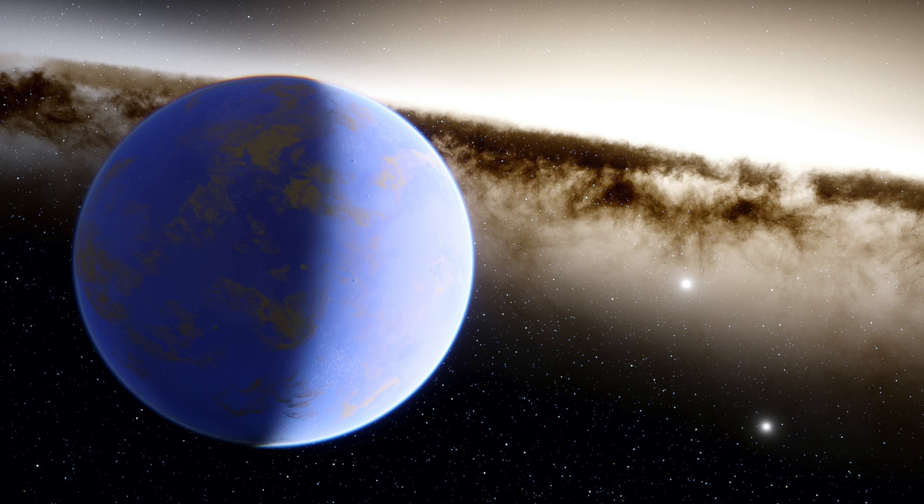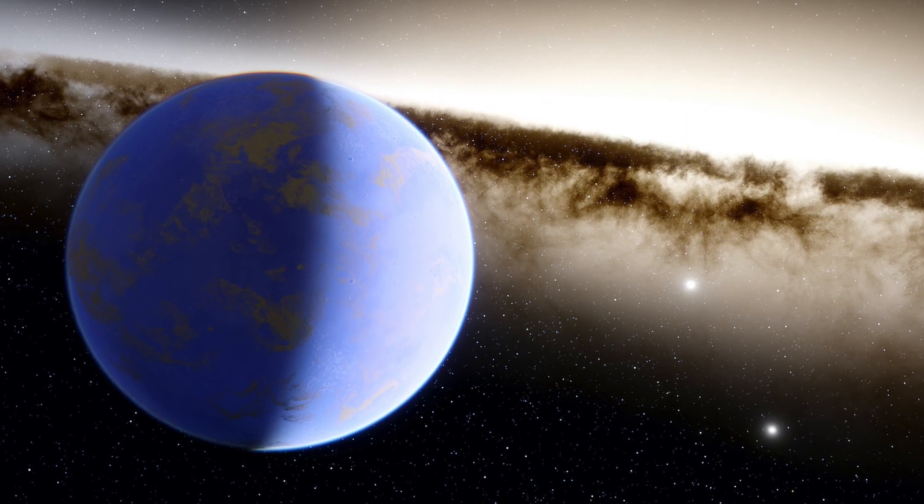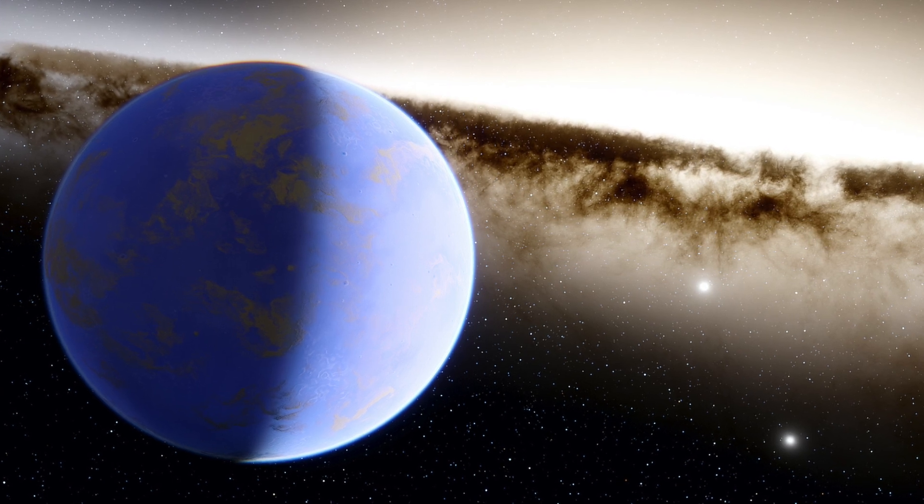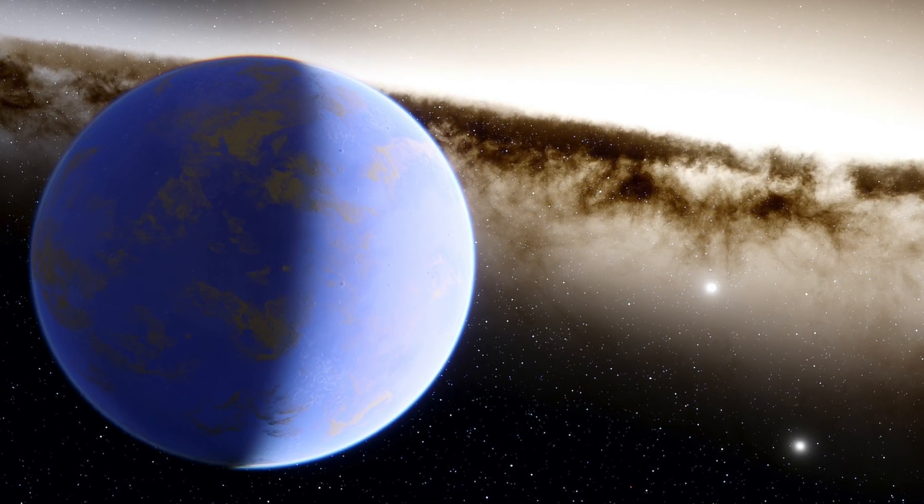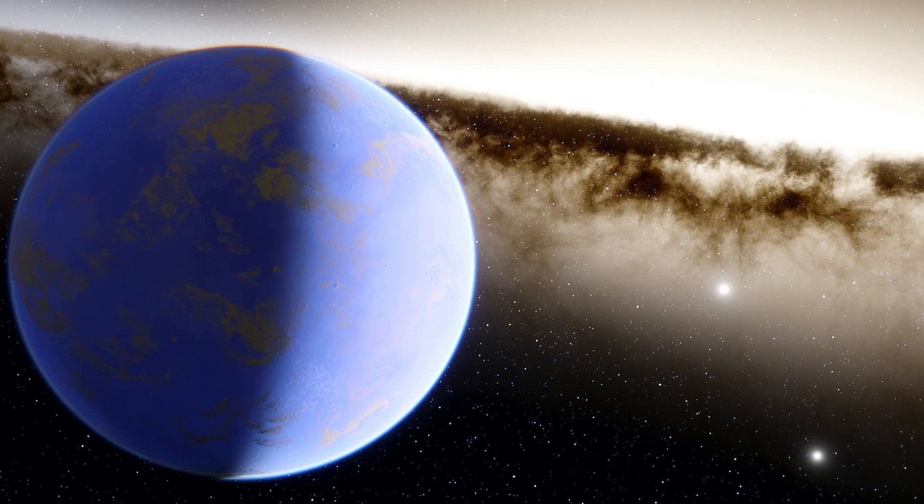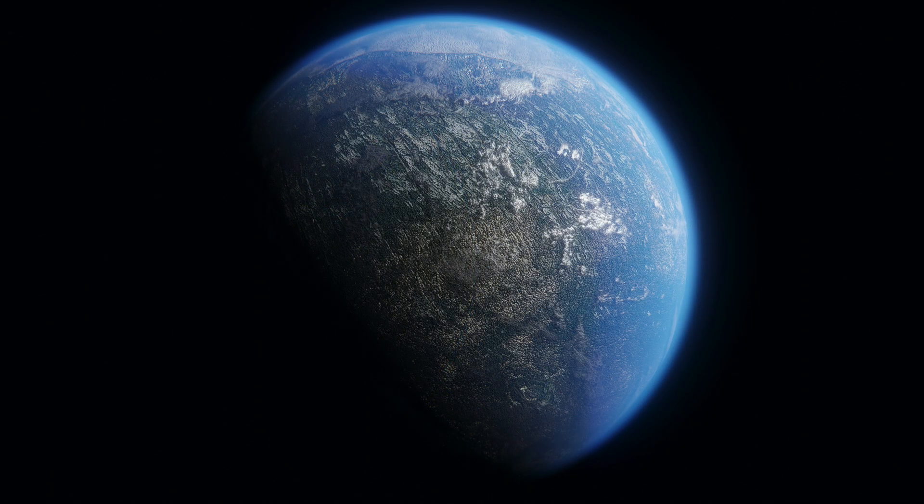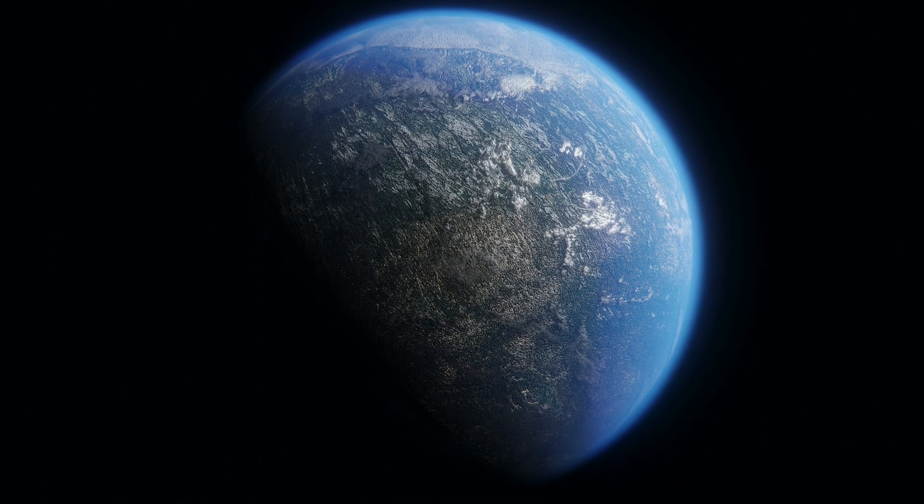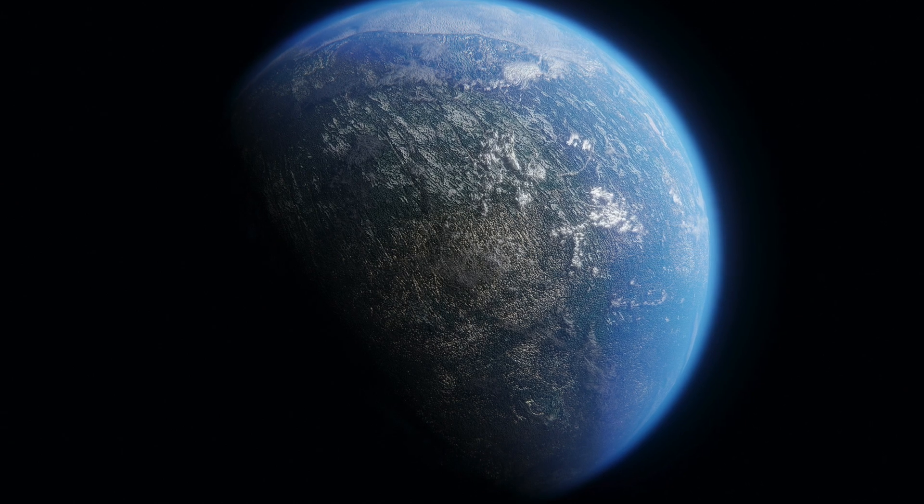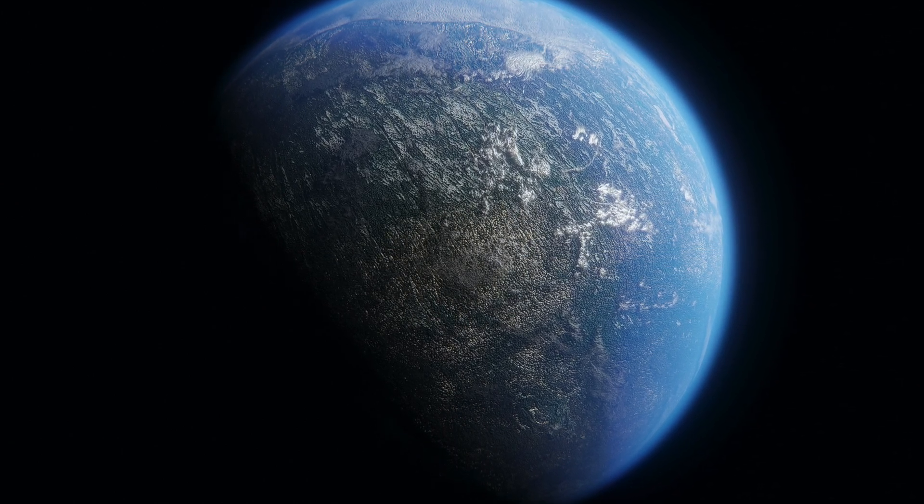NASA's Transiting Exoplanet Survey Satellite has discovered its first Earth-sized planet in its star's habitable zone, the range of distances where conditions may just be right to allow the presence of liquid water on the surface. Scientists confirmed the find, called TOI-700D, using NASA's Spitzer Space Telescope, and are using the discovery to point towards other Earth-like planets.